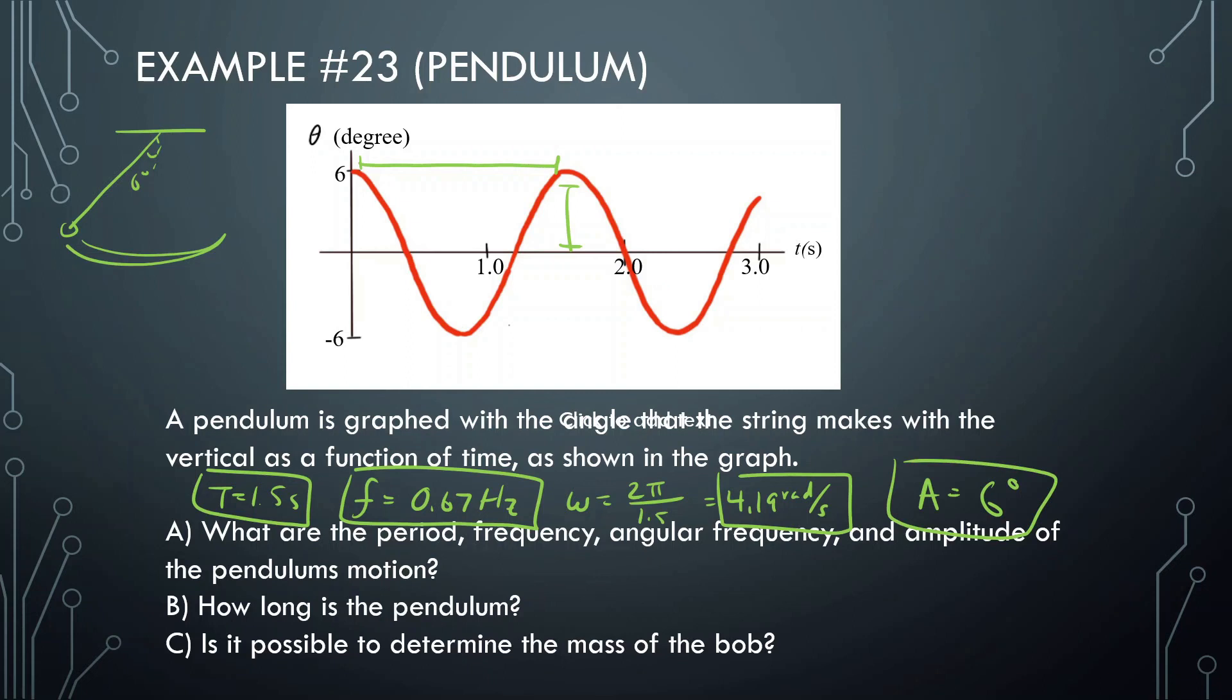How long is the pendulum? We know the formula for the period is 2π square root of L over g. We know the period, we found that at the beginning, 1.5 seconds. So 1.5 equals 2π square root of the length, that's what we're looking for, divided by gravity, which is 10. Putting this in my calculator: 1.5 divided by 2π—make sure to put that parentheses there, or the calculator's going to think you're multiplying—times squared, times 10, and we get a length of 0.57 meters.